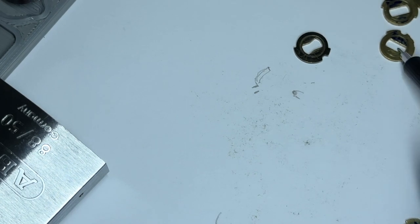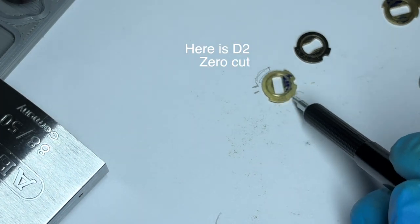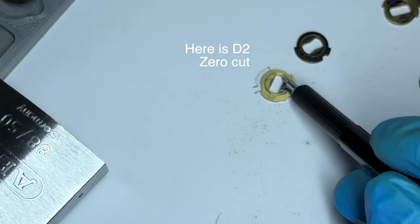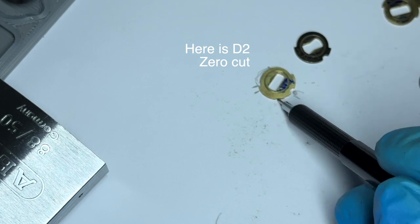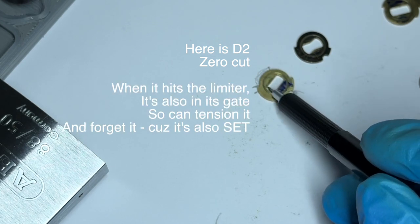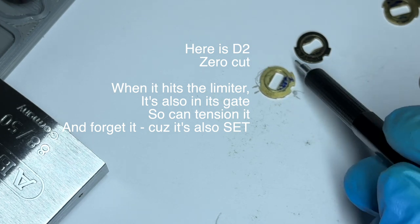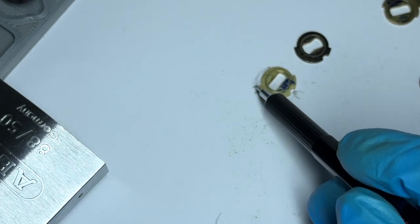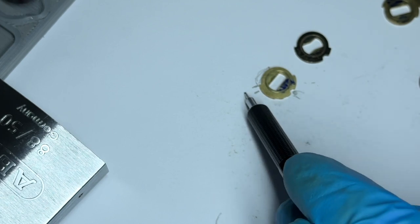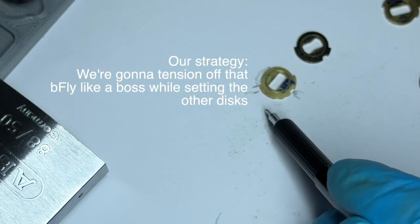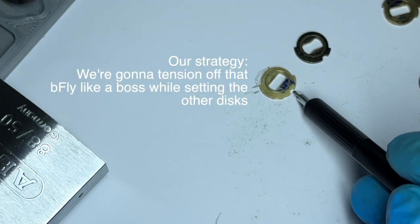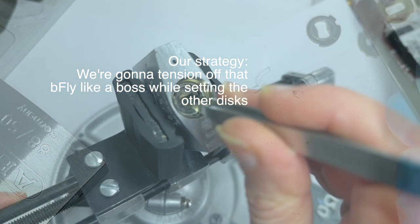And usually when you want to tension off something in front tension, like here we have a zero cut disk. Pretend that's in the front. You can both tension on it because it jams up against the limiter, but it doesn't shove the sidebar anywhere except into the gate. So it can be set at the same time that it is being tensioned off. And then you can use that to set other disks. Fantastic.